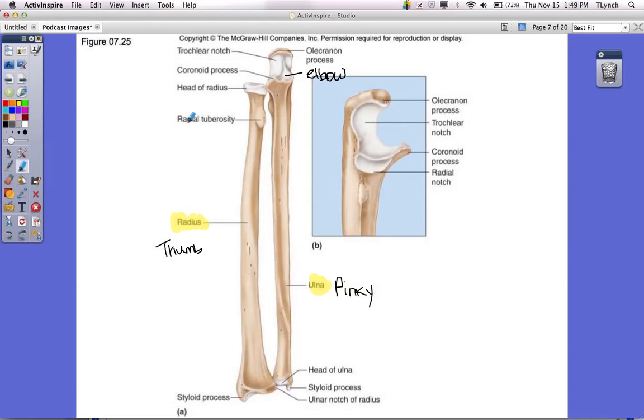So let me switch back over to my highlighter. You should know that this is the head of the radius, which makes sense because your head's on top. You should have also labeled the radial tuberosity. This little bump here, probably an attachment for a muscle. Now, the head of the ulna, this doesn't make sense, is down at the bottom. But you should have also labeled the head of the ulna.